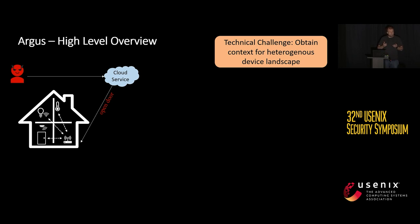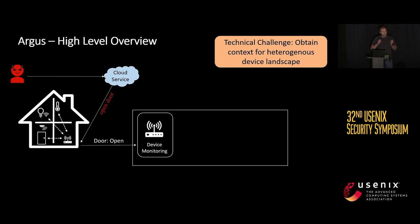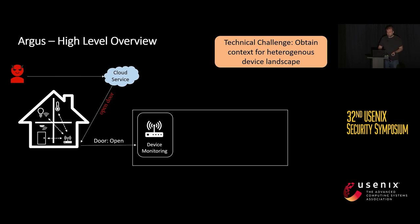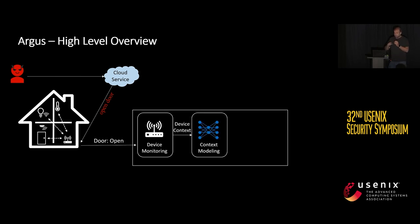For this, we utilize the observation that even if some manufacturers do not care about security, all of them care about usability — because that's what the customer cares about when buying an IoT device. So all of them will make sure that IoT devices can be easily integrated into home automation platforms, and this is where we collect the device states to obtain a complete picture of the smart home. The obtained device states are then converted to feature vectors and sent to the context modeling component.